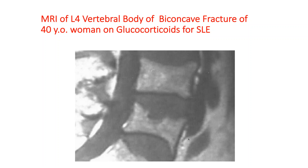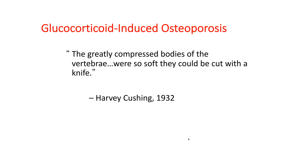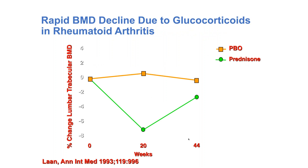This is different than the anterior wedge fracture so commonly seen in women with postmenopausal osteoporosis. One has to ask, what happens to bone that makes it so soft? Harvey Cushing, a famous scientist who in 1932 while investigating Cushing syndrome commented: 'the very compressed bodies of the vertebrae were so soft they could be cut with a knife.' Basically, glucocorticoids soften bone — they turn it to butter.